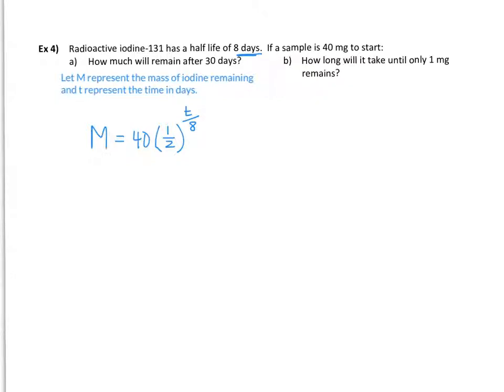How much will remain after 30 days? That means I'm actually subbing in the T value here. So we're going to have a one half and we're going to put in 30 out of eight. So that you can put into your calculator. And I believe if you try that out, I got 2.973. So almost three milligrams is remaining there. 2.973 approximately. So therefore about three milligrams remains after 30 days.